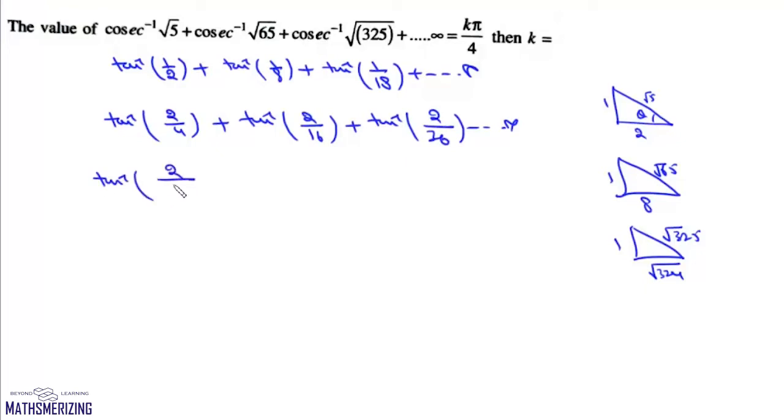We'll write this as 1 plus 1 into 3, tan inverse 1 plus 3 into 5, tan inverse 1 plus 5 into 7, and the series continues up to infinite.